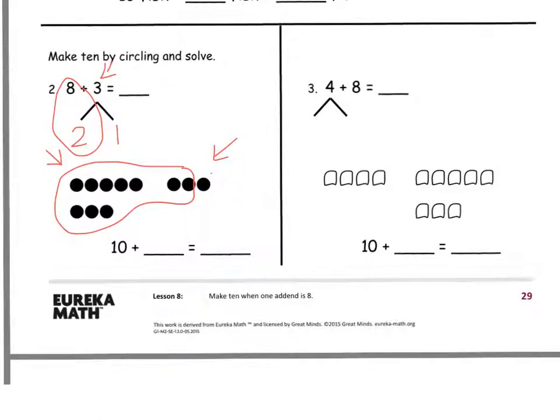Our new number sentence will say 10 plus 1. 10 and 1 make 11. So 8 and 3 also makes 11.